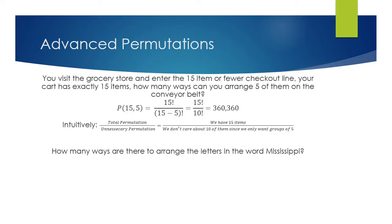So let's say we have the letters of the word Mississippi, and I want to know how many ways are there to arrange the letters in the word Mississippi. Well, from following what we just did, there's 11 letters. So there should be 11 factorial arrangements. However, notice this.